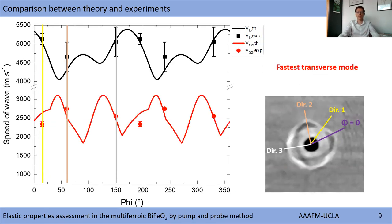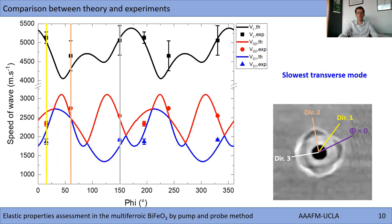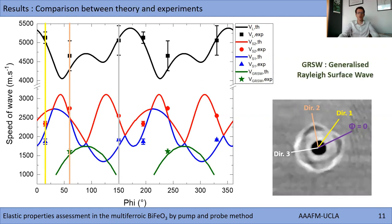Here is the comparison for the fastest transverse mode. Now the experimental and calculated velocity for the slowest transverse mode.